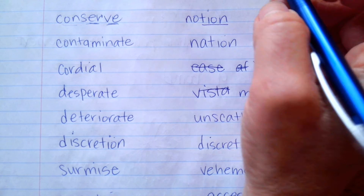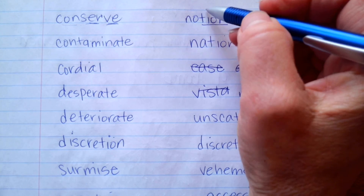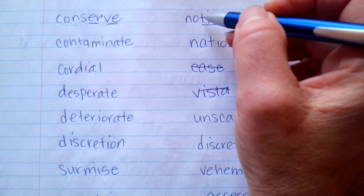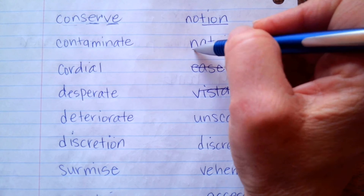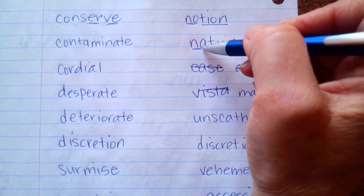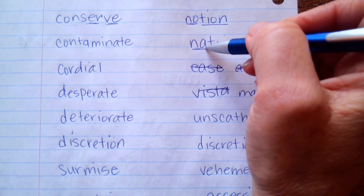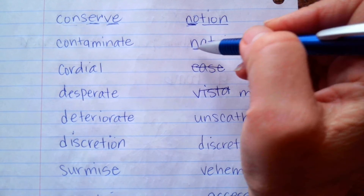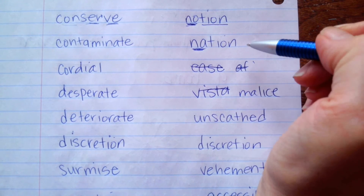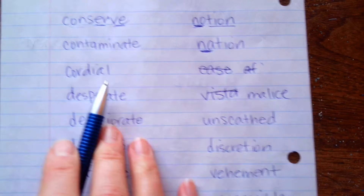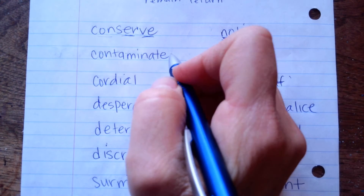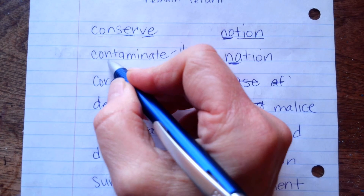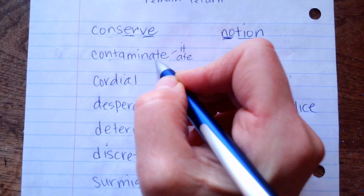T-I-O-N makes 'shun' — notion. What word do you know like notion? You keep saying 'nation', which is almost the same, but 'nation' has an A. This is 'notion'; this is 'nation'. This one is our A-T-E word — can make 'it' or 'ate': contaminate.